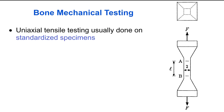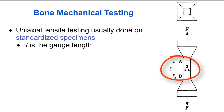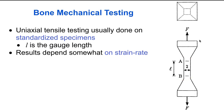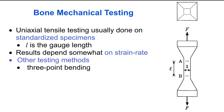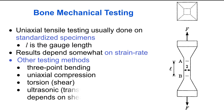Uniaxial tensile testing is usually done on standardized test specimens machined from samples of bone. L is called the gauge length — the portion of the specimen where the strain is measured — and the wider portions are used to attach the sample to the test device. Studies show that the stress-strain curve depends somewhat on the strain rate. Other testing methods include three-point bending, uniaxial compression, torsion or shear testing, and ultrasonic methods, because the speed of transverse wave propagation through bone depends on the shear modulus.